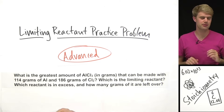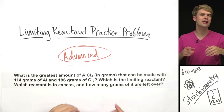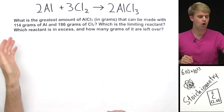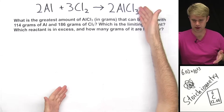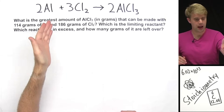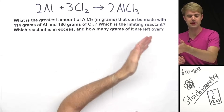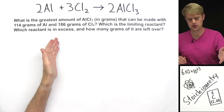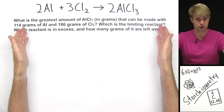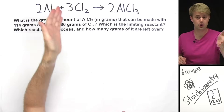We're going to work through a pretty advanced practice problem that asks about limiting reactant and excess reactant. Make sure you have a good understanding of the basics before you tackle this one. We'll use this equation to answer these questions: what is the greatest amount of AlCl₃ in grams that can be made with 114 grams of Al (aluminum) and 186 grams of Cl₂ (chlorine)? Which is the limiting reactant, which reactant is in excess, and how many grams of it are left over?